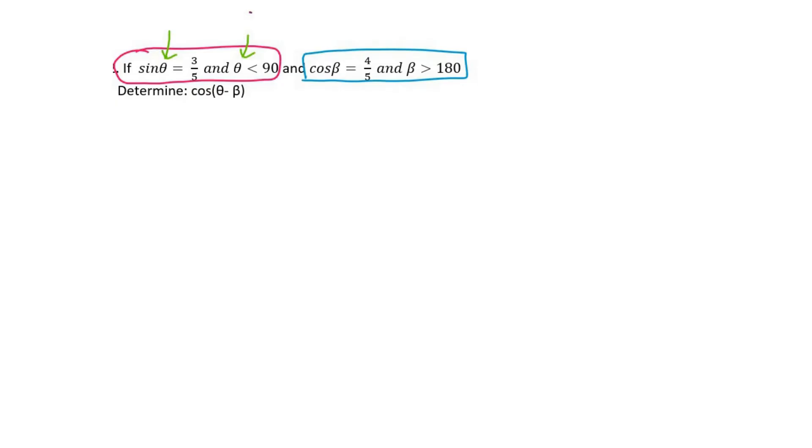Then in this scenario that is a beta. That means we are going to be using two completely different triangles. So what I would do is I would draw two cast diagrams. You don't want to put them on the same cast diagram. It can cause confusion.